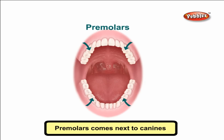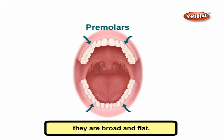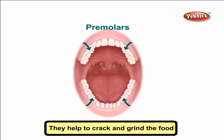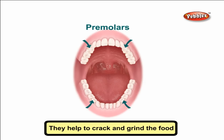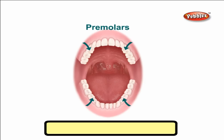Premolars come next to canines. They are broad and flat. There are total eight premolars. They help to crack and grind the food into fine pieces.